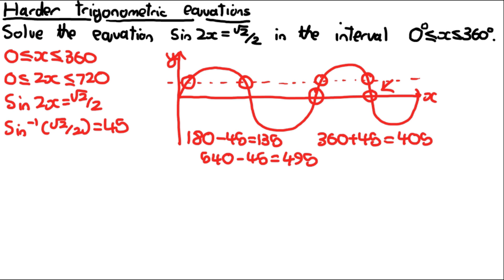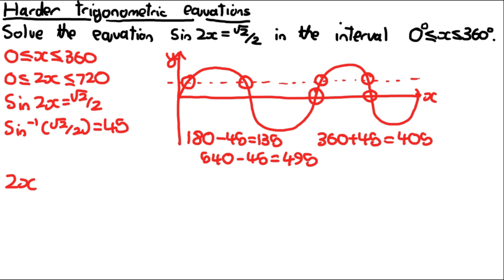It's a bit difficult to remember these numbers because they get quite big — just remember it goes up in 180s. Now we've got all the solutions, so we write: 2x is equal to 45, 135, 405, and 495. It's important that it's 2x here, as that is what is inside the sin function.